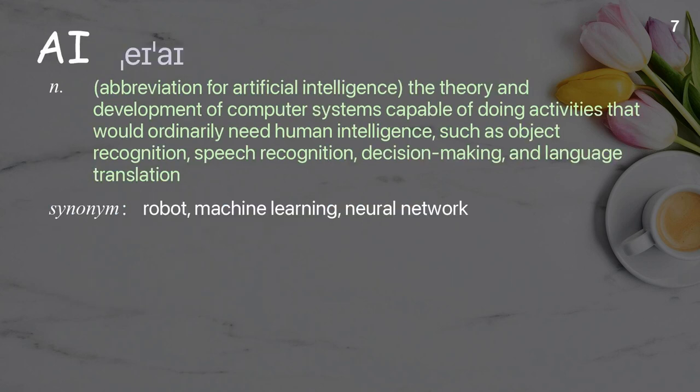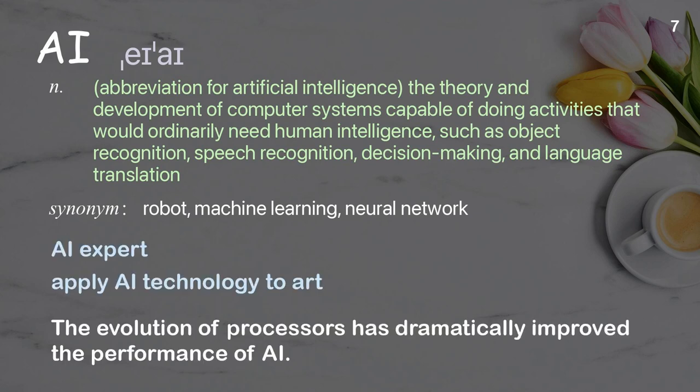AI (abbreviation for artificial intelligence): the theory and development of computer systems capable of doing activities that would ordinarily need human intelligence, such as object recognition, speech recognition, decision-making, and language translation. Examples: AI expert; the evolution of processors has dramatically improved the performance of AI.